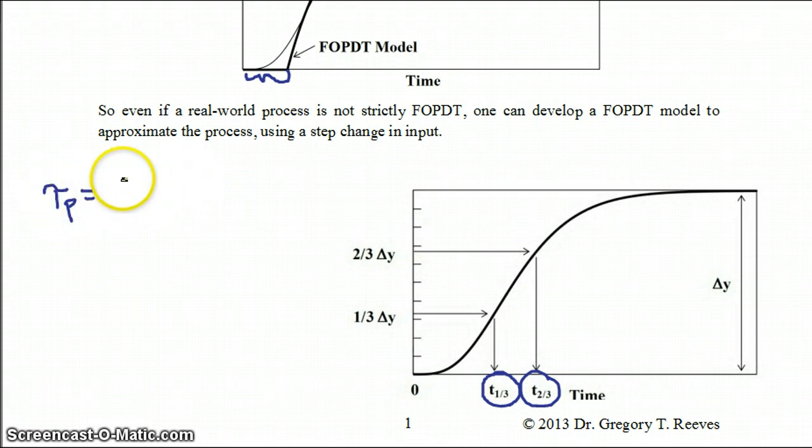So your tau_p in this case is 0.7 times (t_2/3 minus t_1/3).